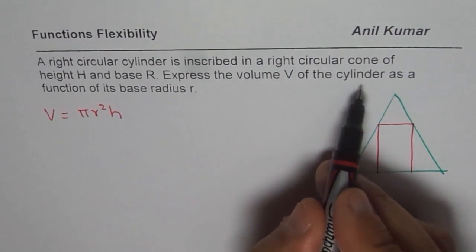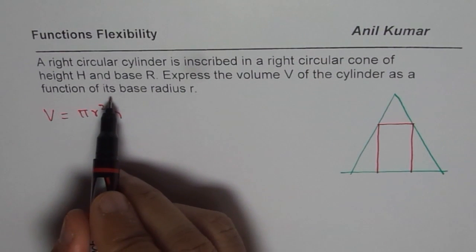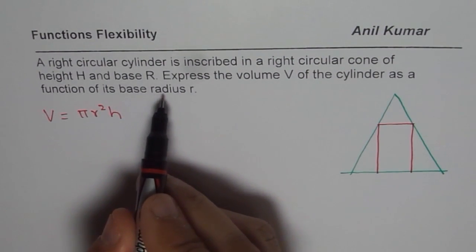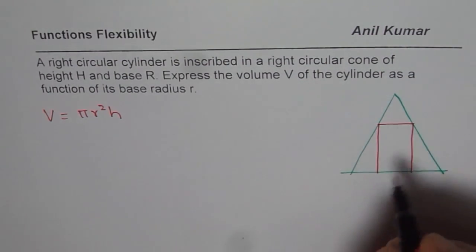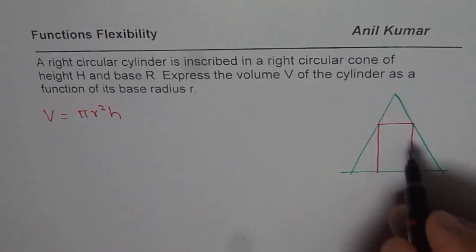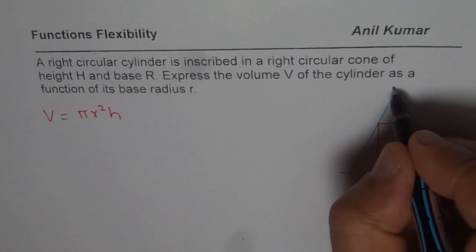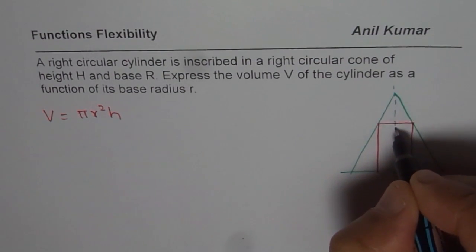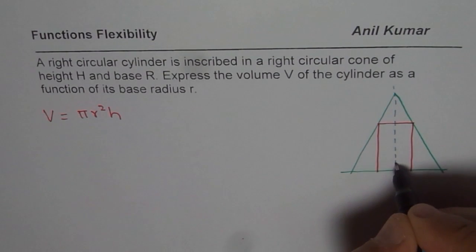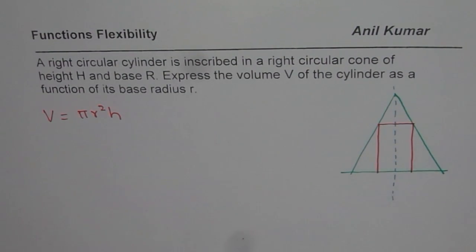We have to express this volume of a cylinder as a function of its base radius r. That is what it is, which is inscribed in a particular cone. Let me just do a bit of work here so that I can define my variables and then we move forward from there.